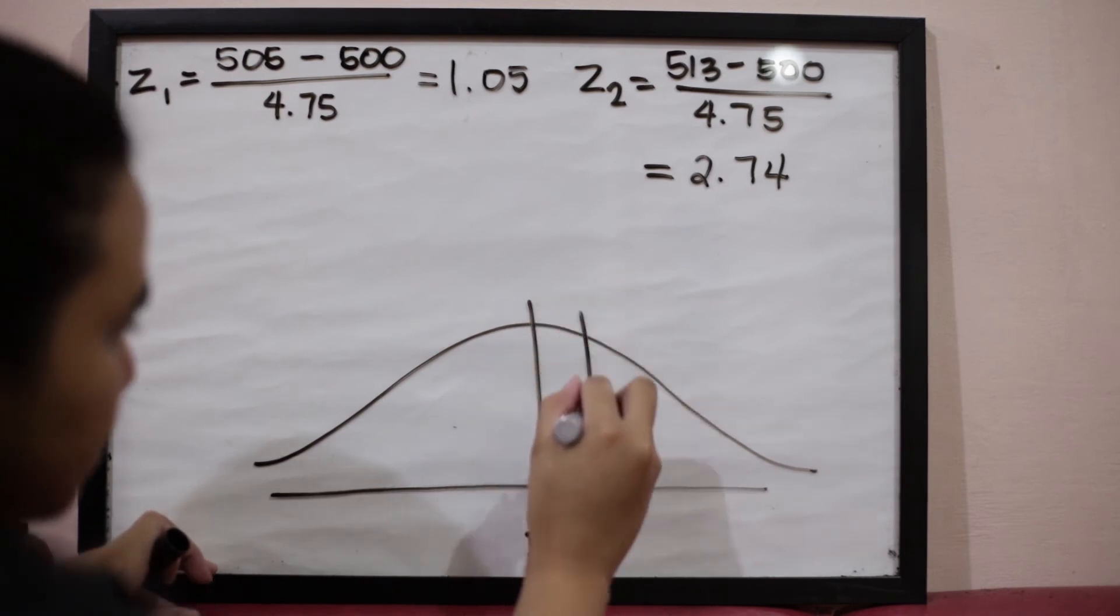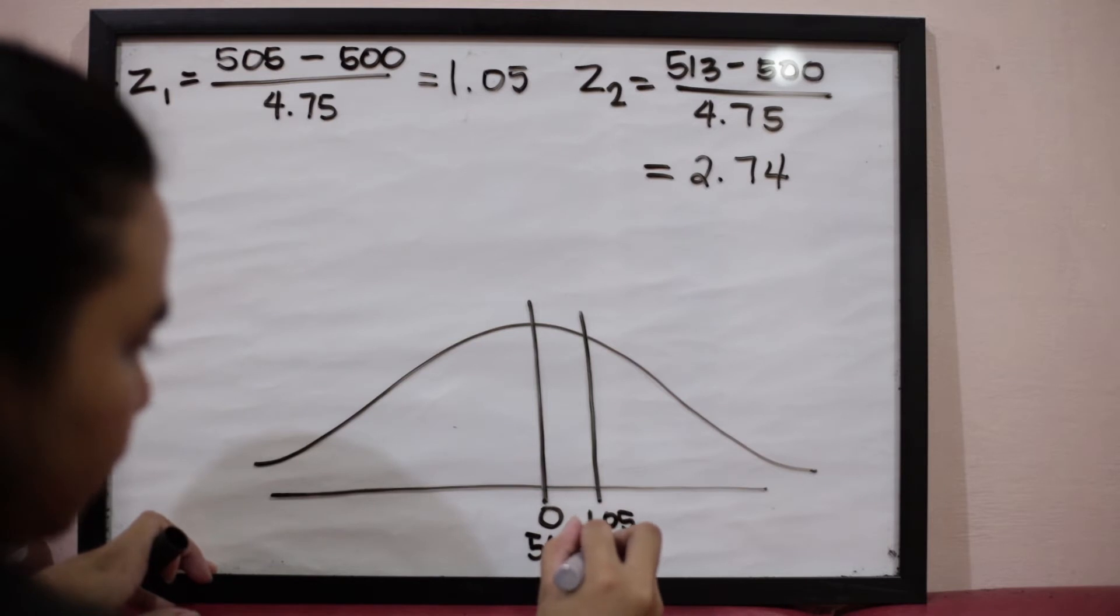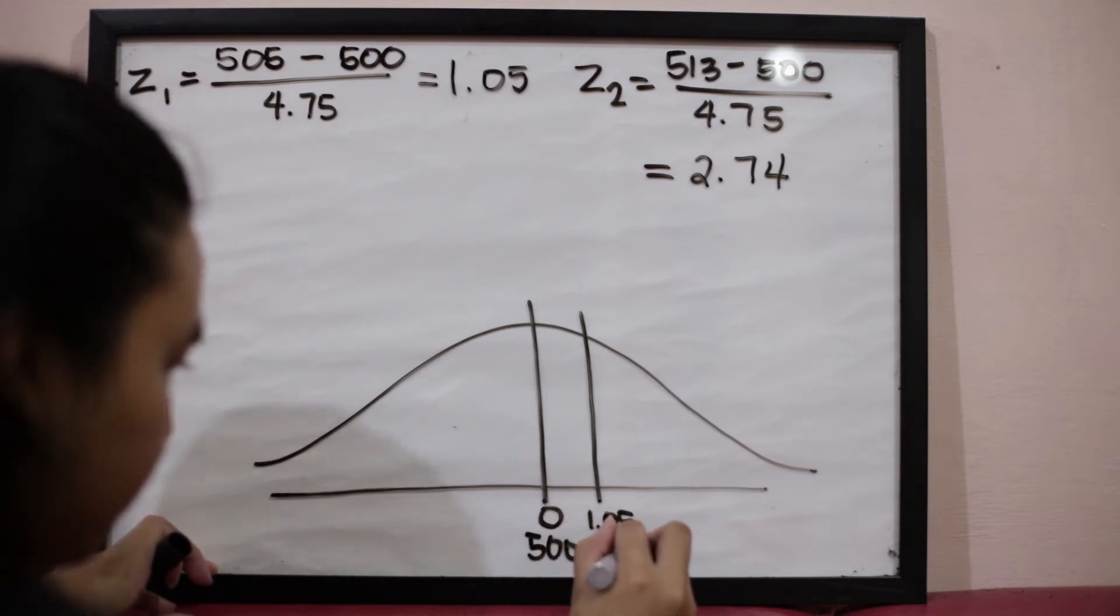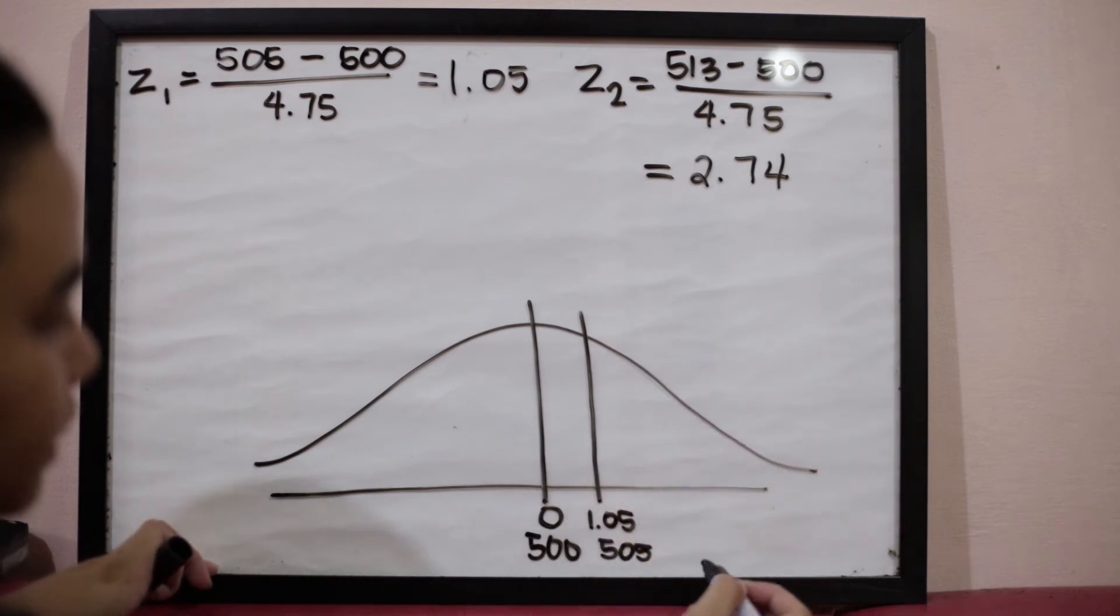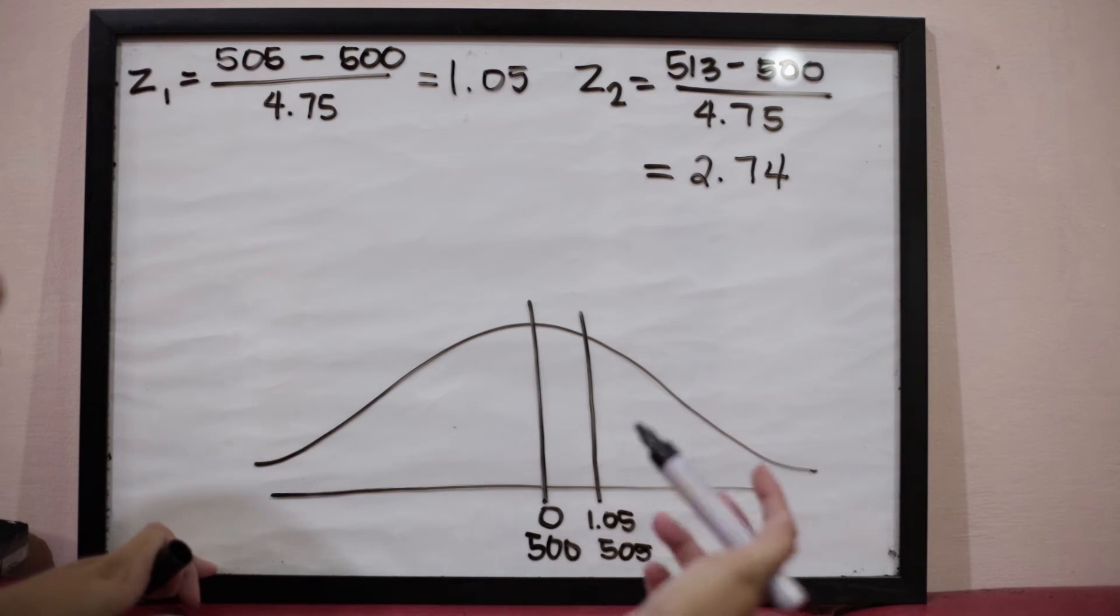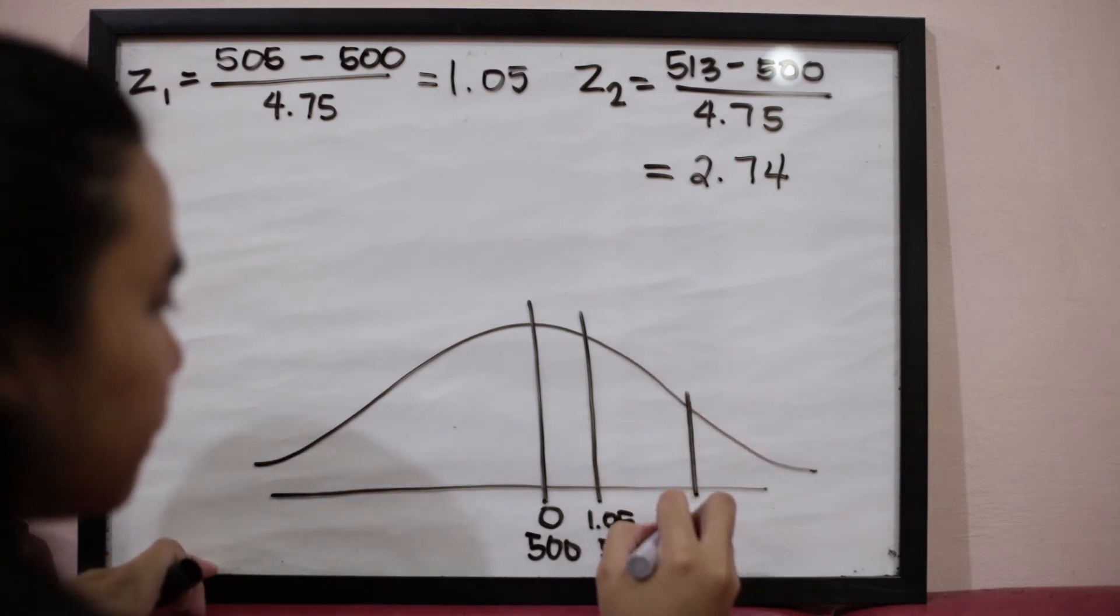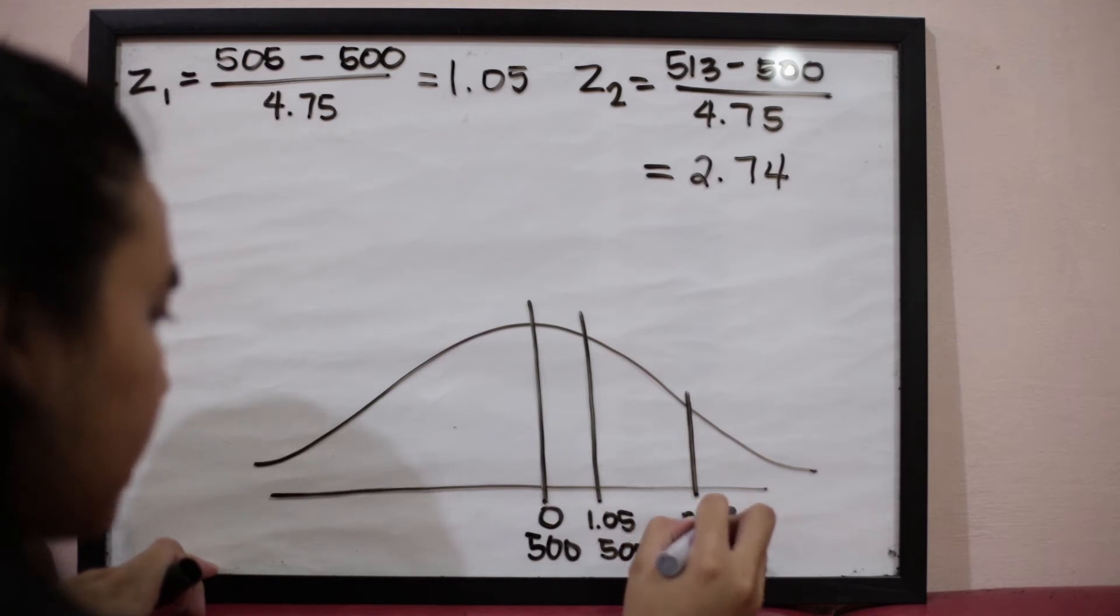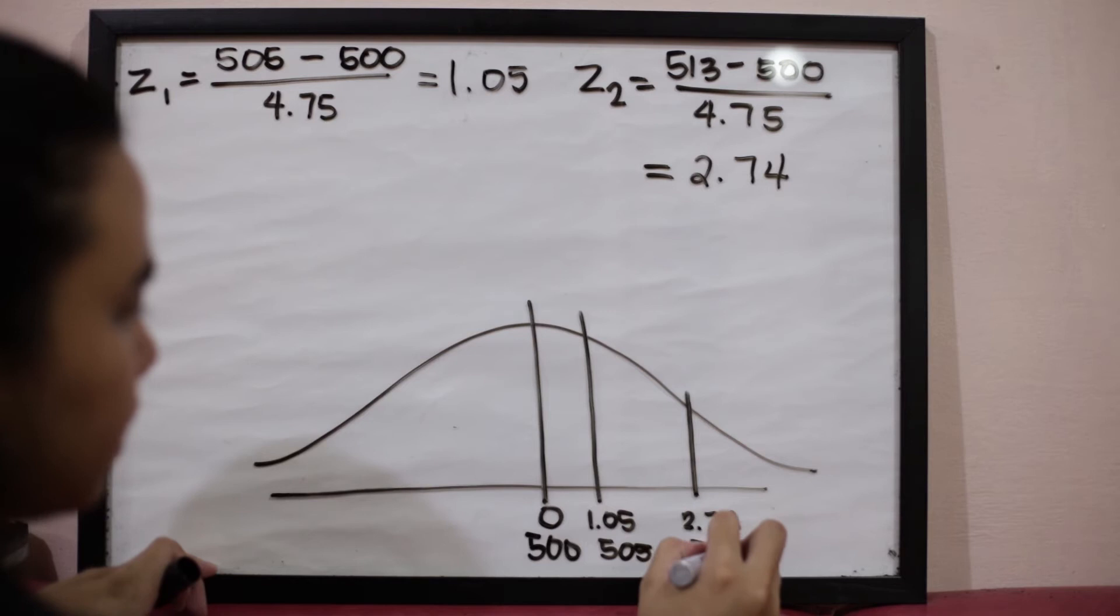Let's say this is 1.05, and the equivalent raw score for this is 505. We also have 2.74. Since this is also positive and 2.74 is beyond 1.05, let's say we place it here at 2.74. The raw score equivalent for this one is 513.